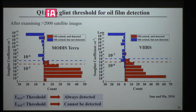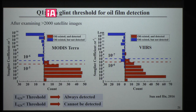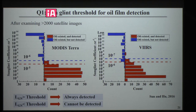The sun glint threshold for MODIS has been determined as 10⁻⁵ to 10⁻⁶. The same threshold has been determined for VIIRS — for VIIRS, the threshold is 10⁻⁶ to 10⁻⁷. With this sun glint threshold, when sun glint strength is greater than 10⁻⁵, oil slick can always be detected. When sun glint strength is lower than 10⁻⁶, oil slick can never be detected — this is for oil films. By quantifying this sun glint threshold, false negative detections can be significantly reduced.